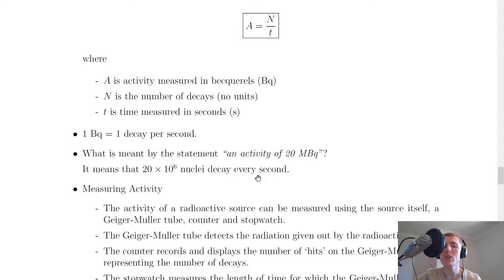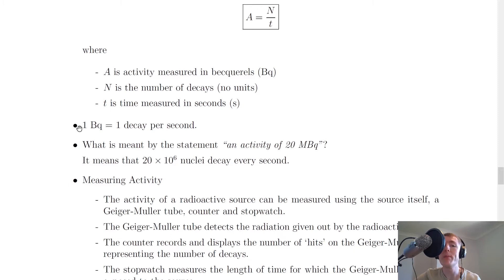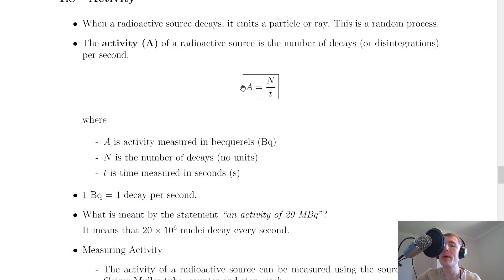N is the number of decays, which has no units because it's just a number, and t is the time measured in seconds. A common multiple choice question might be: what is one becquerel equivalent to? Well, one becquerel is equal to one decay per second.